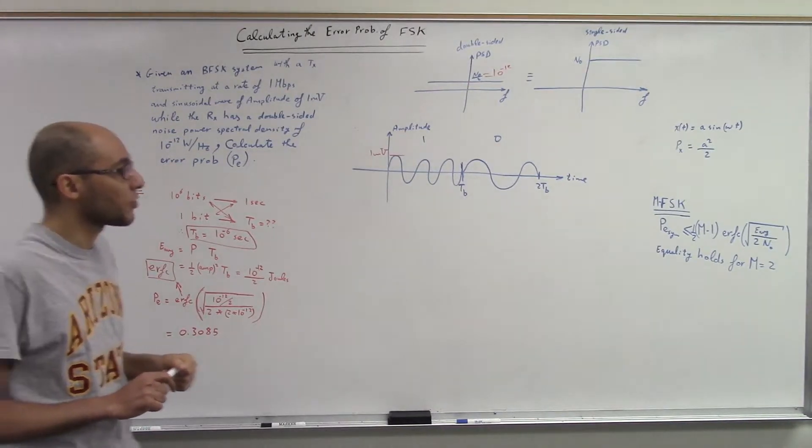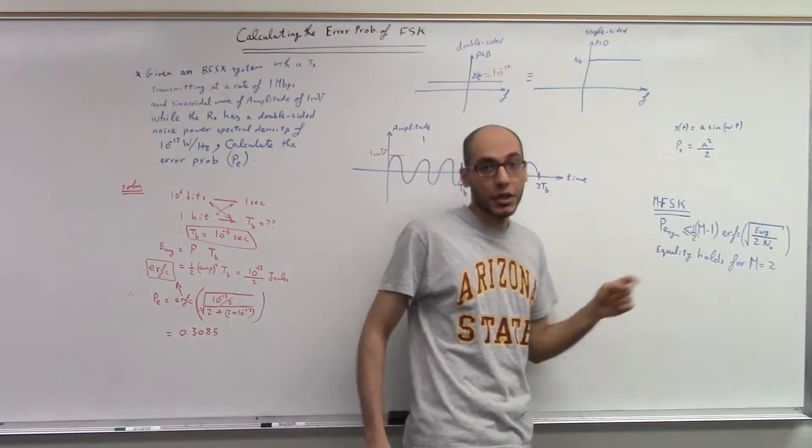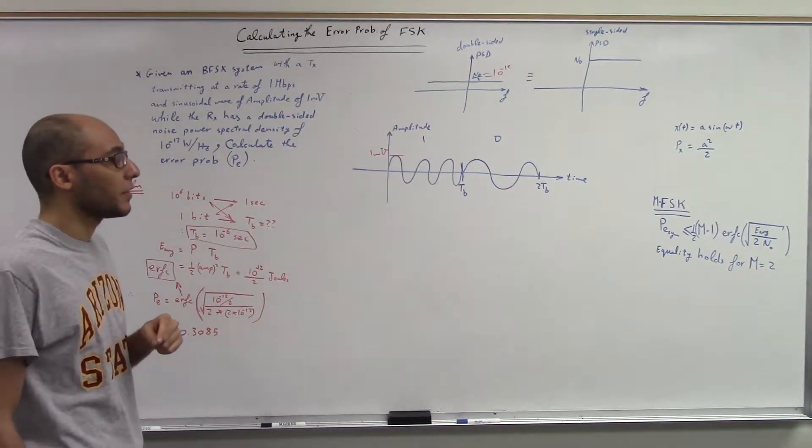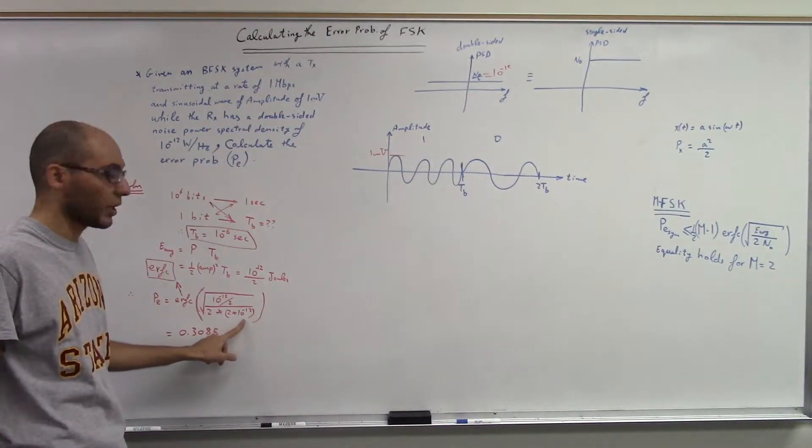So the formula requires us to calculate the average energy and n_0 so that we can calculate the probability of error. I need to find the n_0, so I did find it, multiplied by 2, so that's why it's 2 times 10 power negative 12.